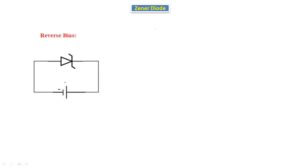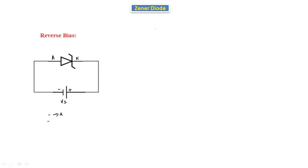Now let's see the reverse bias characteristics. In reverse bias, we reverse the terminals: the negative terminal is connected to the anode and the positive terminal is connected to the cathode. Then we can say that the Zener diode is in reverse bias condition.